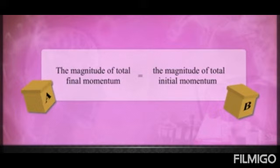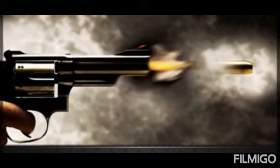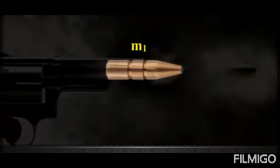So the statement we get is: the total magnitude of final momentum is equal to the total magnitude of initial momentum. Whatever the initial momentum was, it is equal to the final momentum. You need to derive this equation and write the statement that total initial momentum always equals total final momentum. For example, when a bullet is fired from a gun, the bullet goes forward and the gun recoils back.